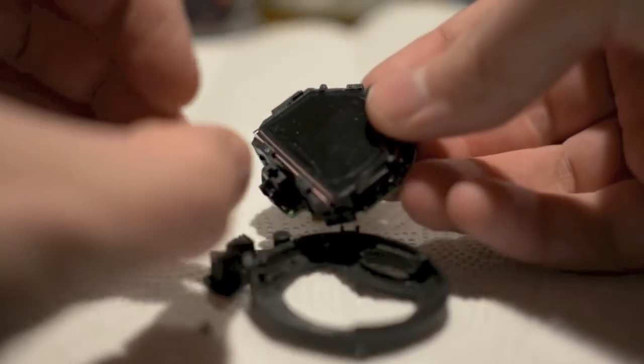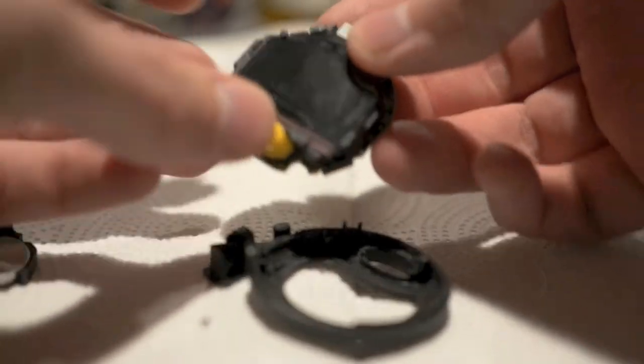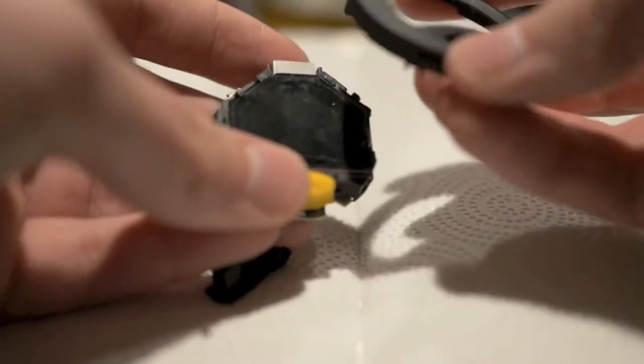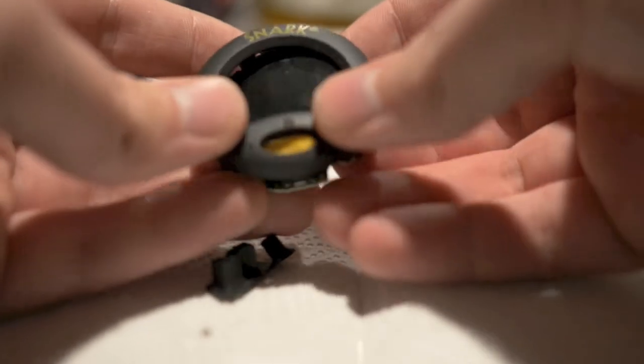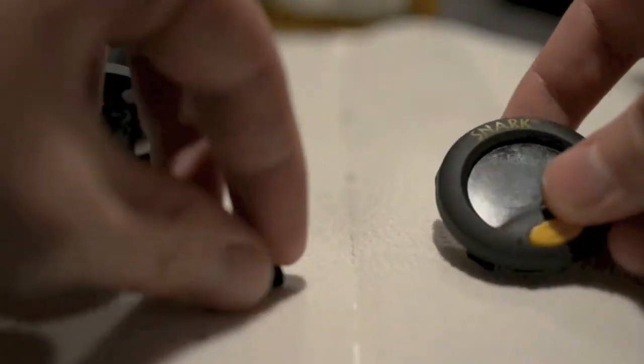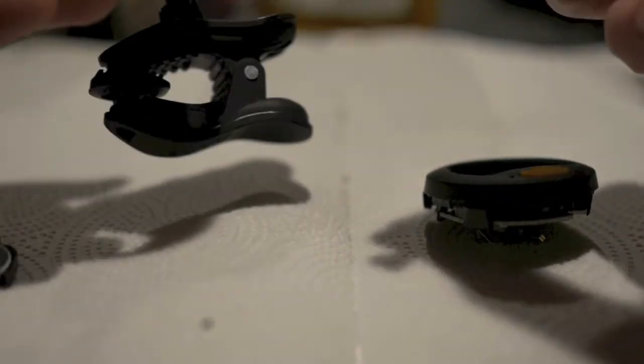And to put it back together, you just put your little yellow button back in. Then you put the ring back on over it. Then you'll want to make sure you get your buttons lined back up in the base of the body.